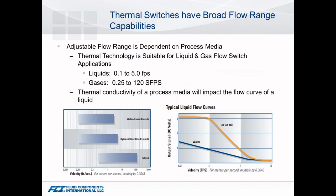Where things kind of started on the thermal switch side, we're really looking at liquid and gas type applications. True benefits include very low flow capability — in that 0.1 to 5 feet per second for liquids, and gas has a much broader range. When you look at liquids, the range is going to vary — water-based versus hydrocarbon shows a slight difference in range, really related to the cooling effect of the liquid itself, and you can see it's quite lower than that of gases.